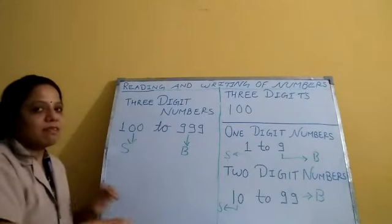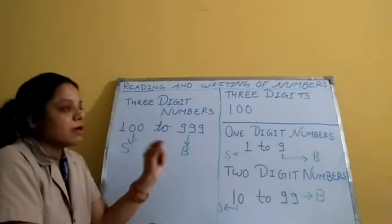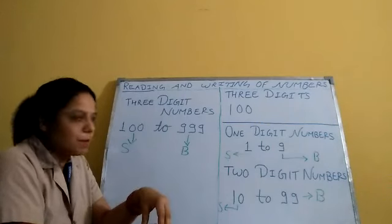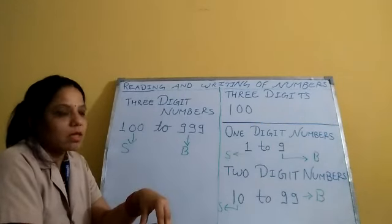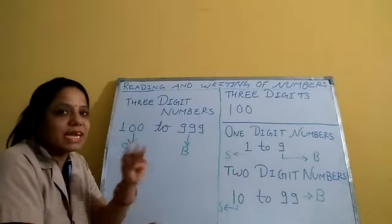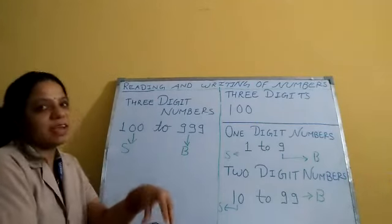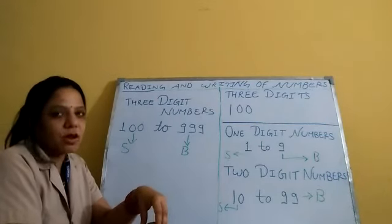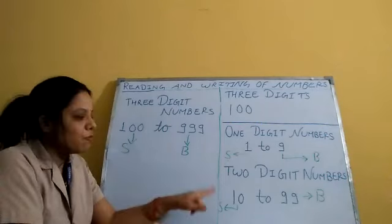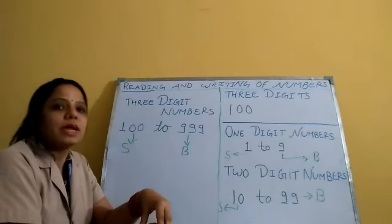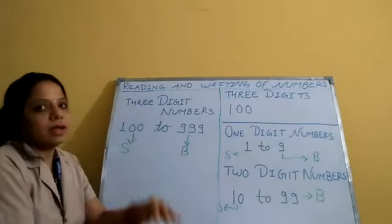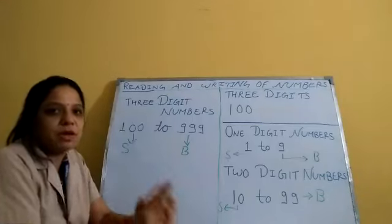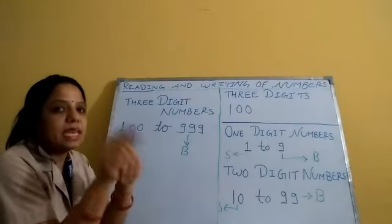Here are some questions for you. What is the smallest 1-digit number? The answer is 1. What is the biggest 3-digit number? 999. What is the smallest 2-digit number? 10. So now you understand very well what is the difference between digits and numbers.